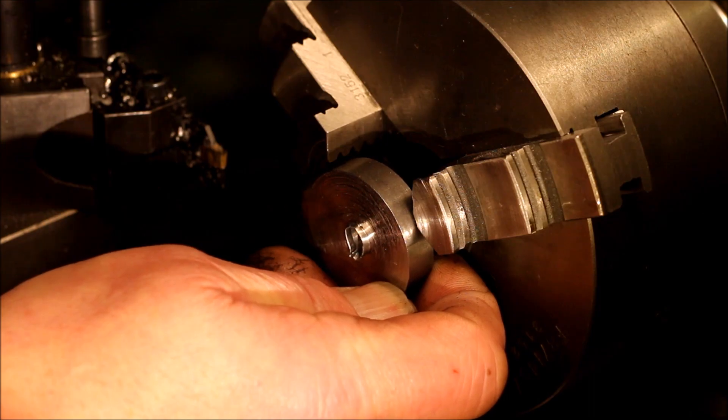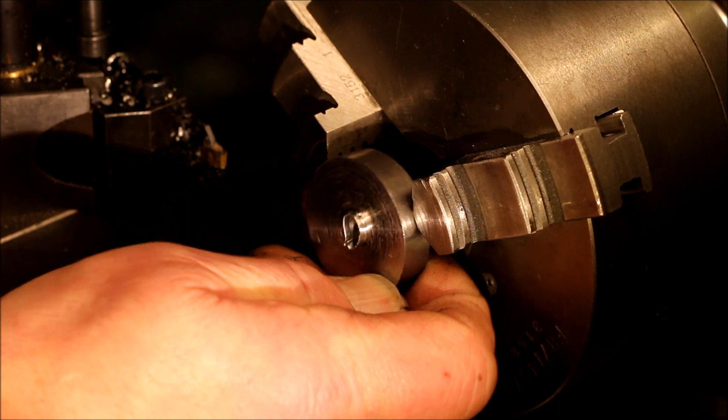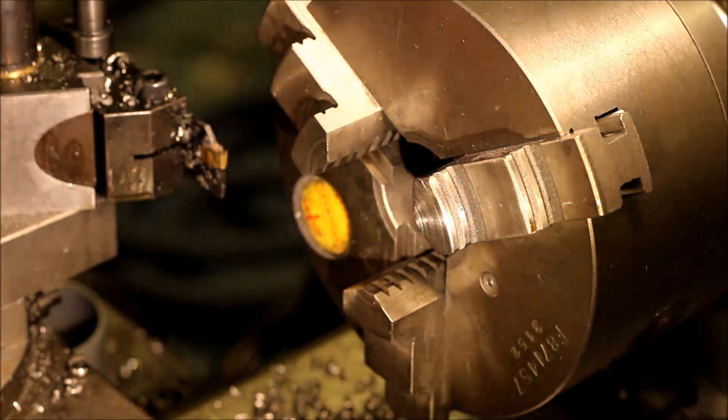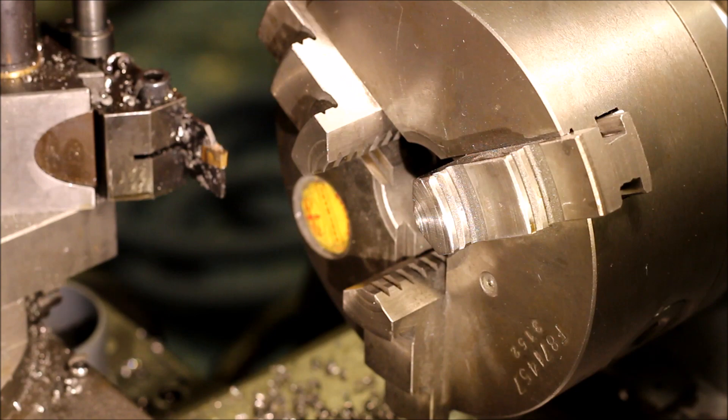I'll put a link in the description to this video. It's really worth looking at. The solution is simple. Now I have the collet in the lathe, and the chuck is mounted on the spindle.